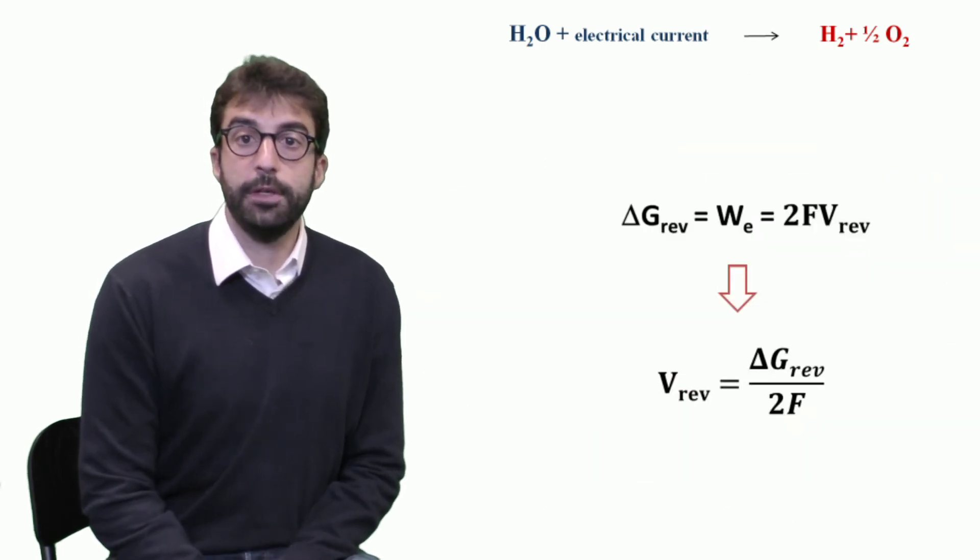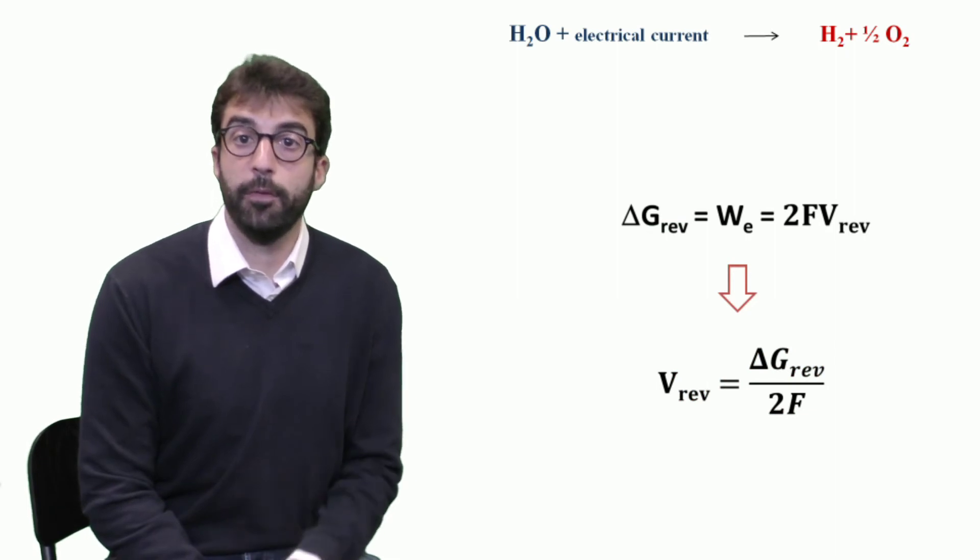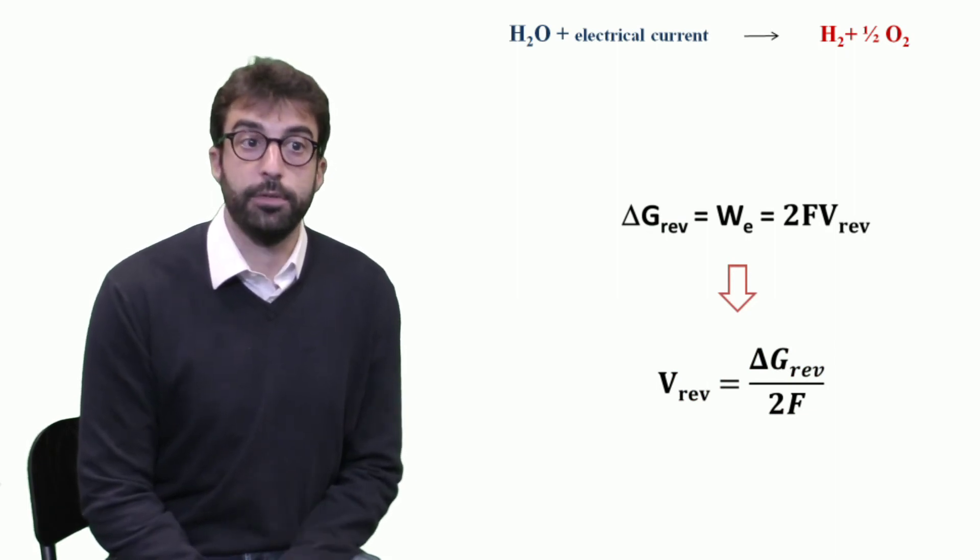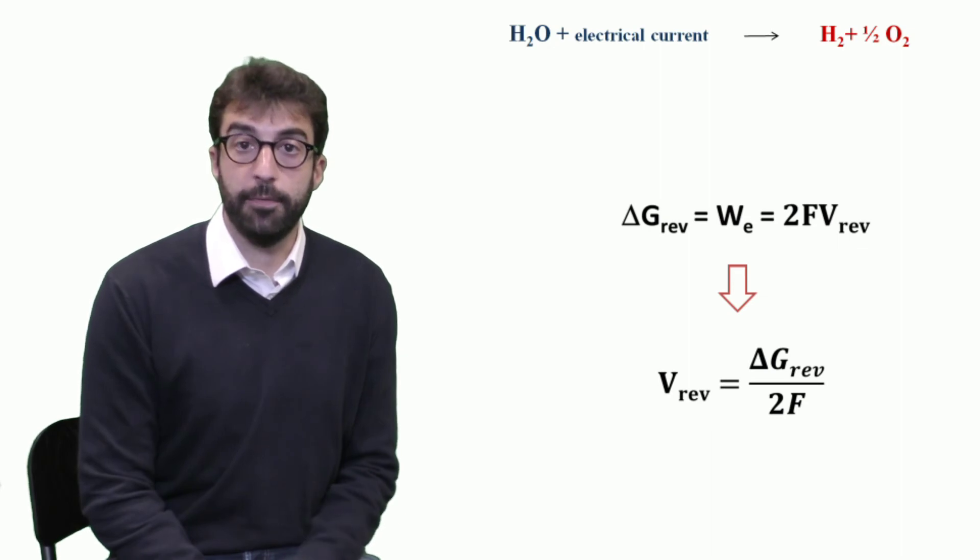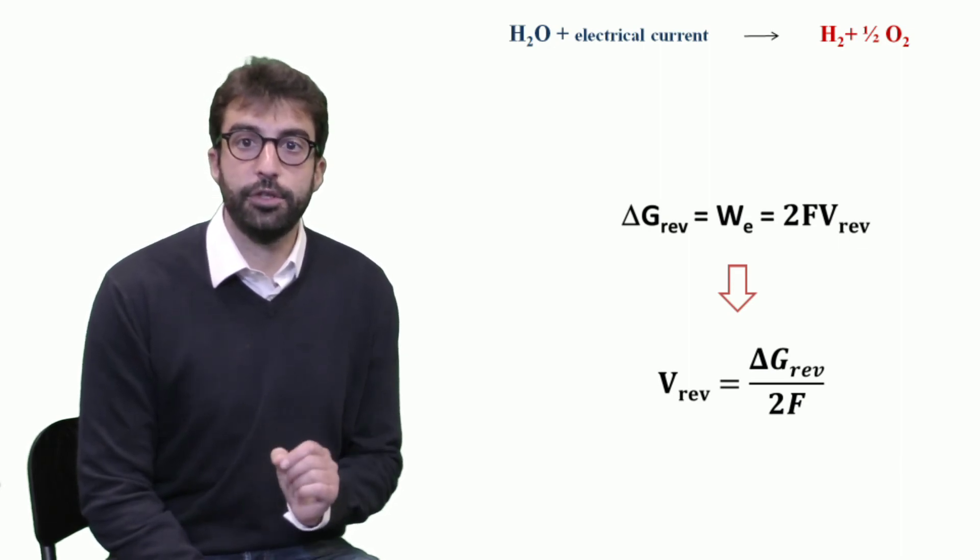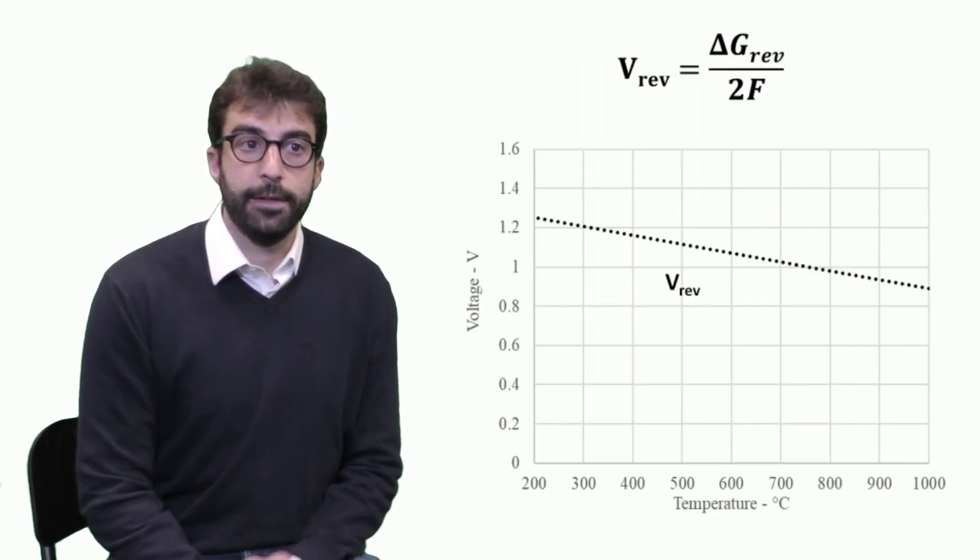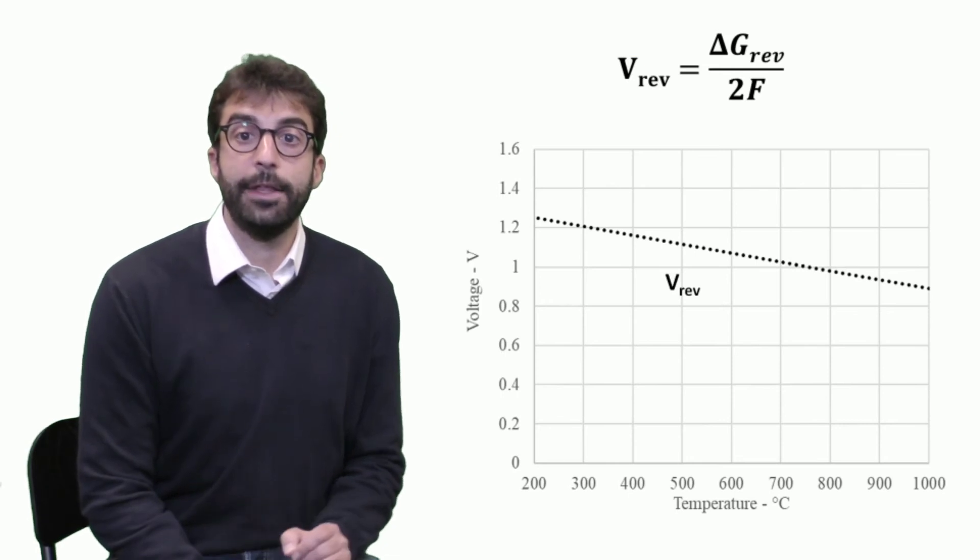And what we can do is to calculate as well the reversible voltage from the same equation, and calculate it as the ratio between the delta G of Gibbs reaction divided by two times Faraday constant. So this becomes a sort of measuring the energy in the form of voltage. And as for Gibbs energy, the reversible voltage decreases with amount of temperature.